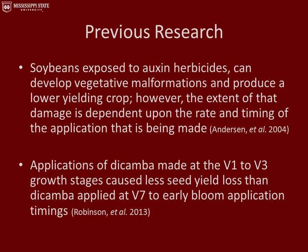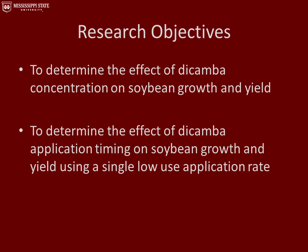Previous research has indicated that soybeans exposed to auxin herbicides can develop vegetative malformations and produce lower-yielding crop. However, the extent of that damage is dependent upon the rate and timing of the application. Also, previous research has indicated that dicamba applications made at the V1 to V3 growth stages cause less seed yield loss than dicamba applied at V7 to early bloom application timings. Our research objectives were to determine the effect of dicamba concentration on soybean growth and yield, and also to determine the effect of dicamba application timing on soybean growth and yield using a single low-use application rate.